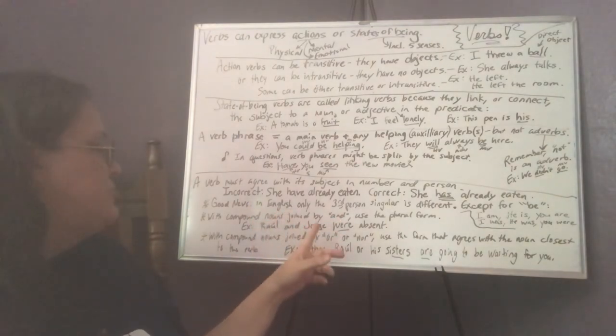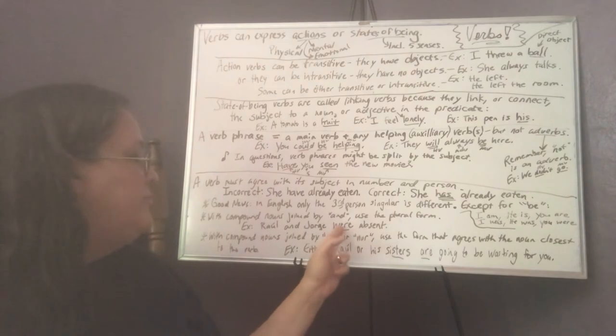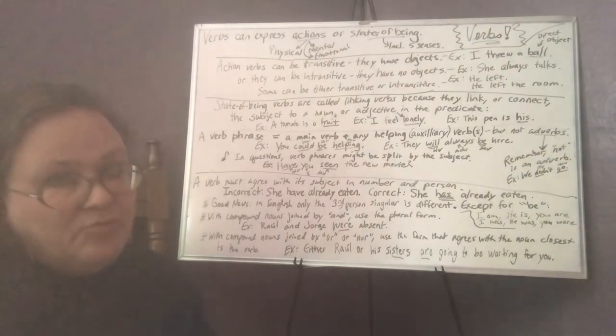And with compound nouns joined by and use the plural form. So Raul and Jorge were absent. Now Jorge is only one person, but since we've got the two of them together, then we need to use the plural form of the verb. It's incorrect to say Raul and Jorge was absent. Not right.